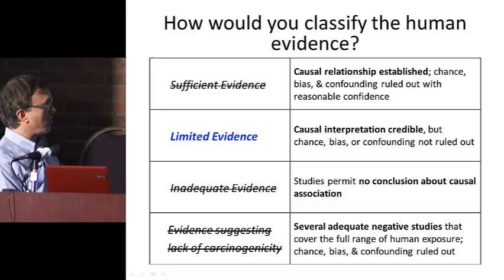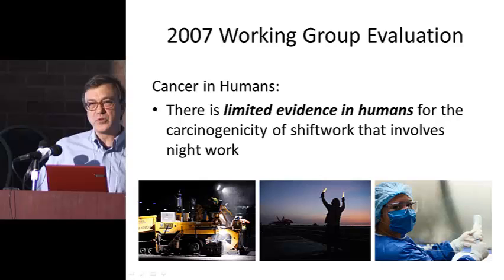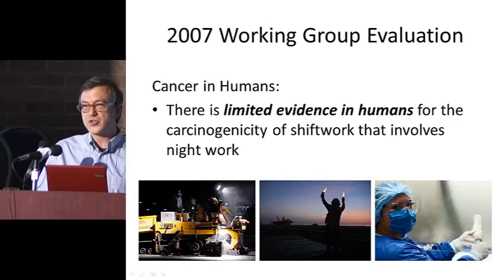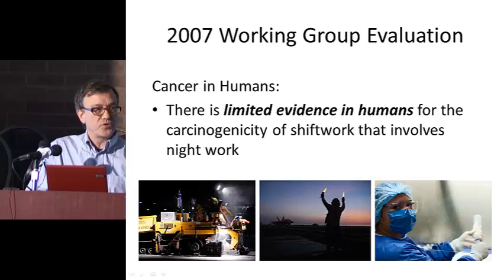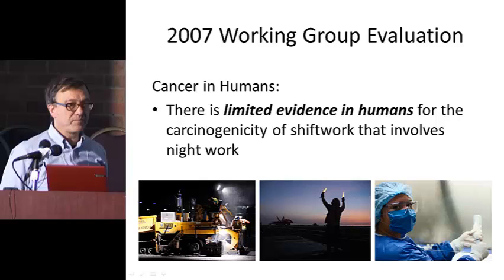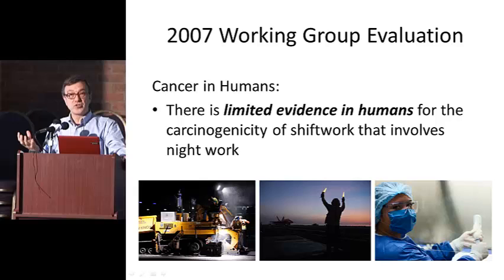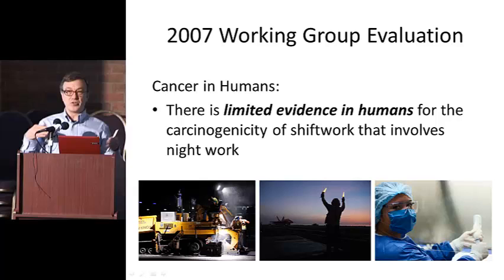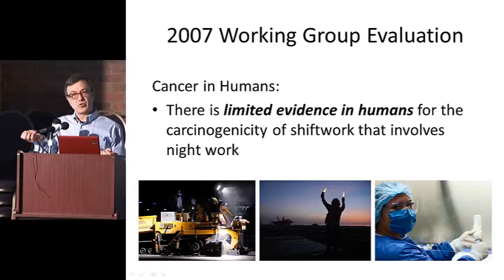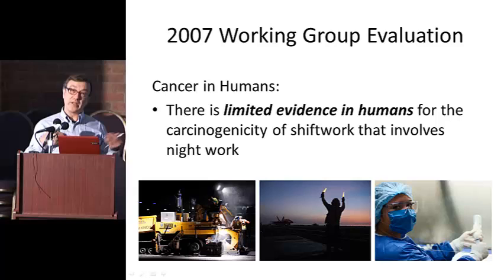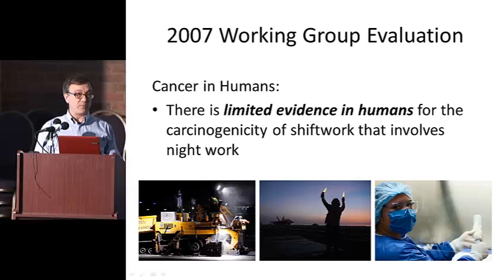The working group decided there was limited evidence in humans for shift work that involves night work. Even within the working group there was a range — some felt the evidence was stronger, some weaker — but the great majority went with the limited category when it went to the full committee vote. The feeling was that sometimes when you have a body of very similar studies, there might be a single underlying confounding factor. In this case, the mixed bag of study types was a limitation for drawing strong conclusions, but also made people think it wasn't any one item causing them all to go in the same direction. Also, measuring exposure poorly usually waters out effects rather than amplifying them, and yet a number of studies did have positive results.